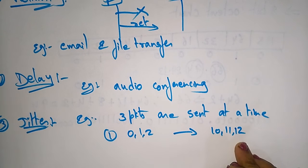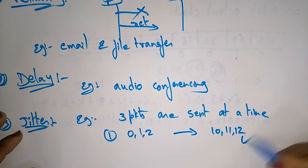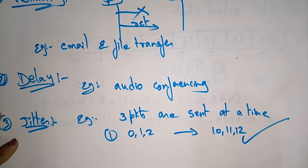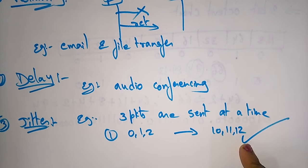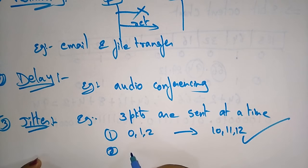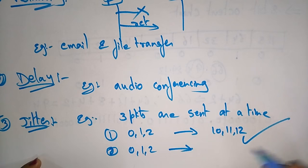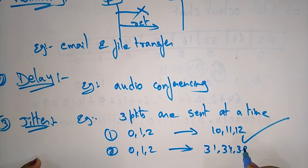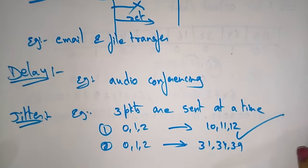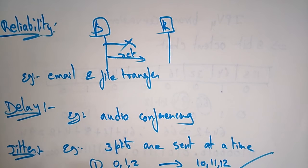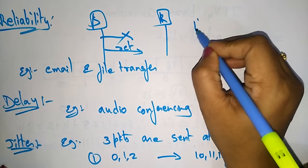If the delay is the same for all packets, the telephonic conversation is acceptable. But suppose three packets — 0, 1, 2 — are received at times 31, 34, and 39. The delays between packets are different, so this delay pattern is not acceptable for telephonic conversation. That is another flow characteristic of quality of service: jitter.